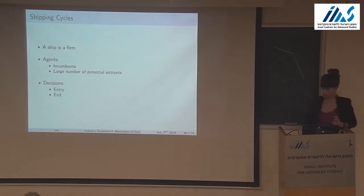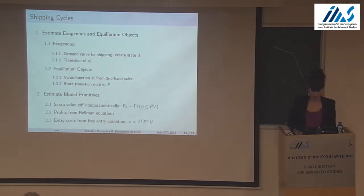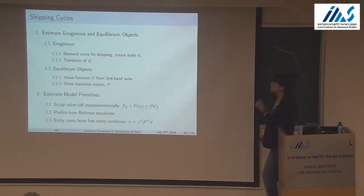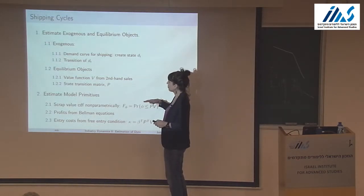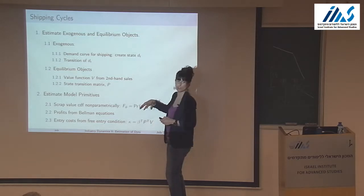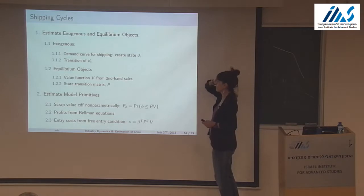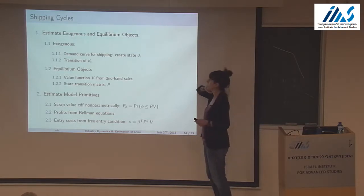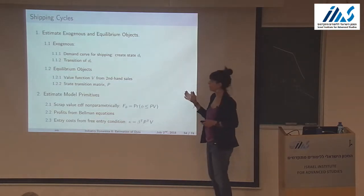I left off here and wanted to give a brief sense of how estimation works, choosing two or three steps to show you. There are two steps: the first does exogenous and equilibrium objects, and the second does the actual model primitives — entry cost, scrap values, and per-period profit functions. That's a little different from BBL, where you take value functions as given.